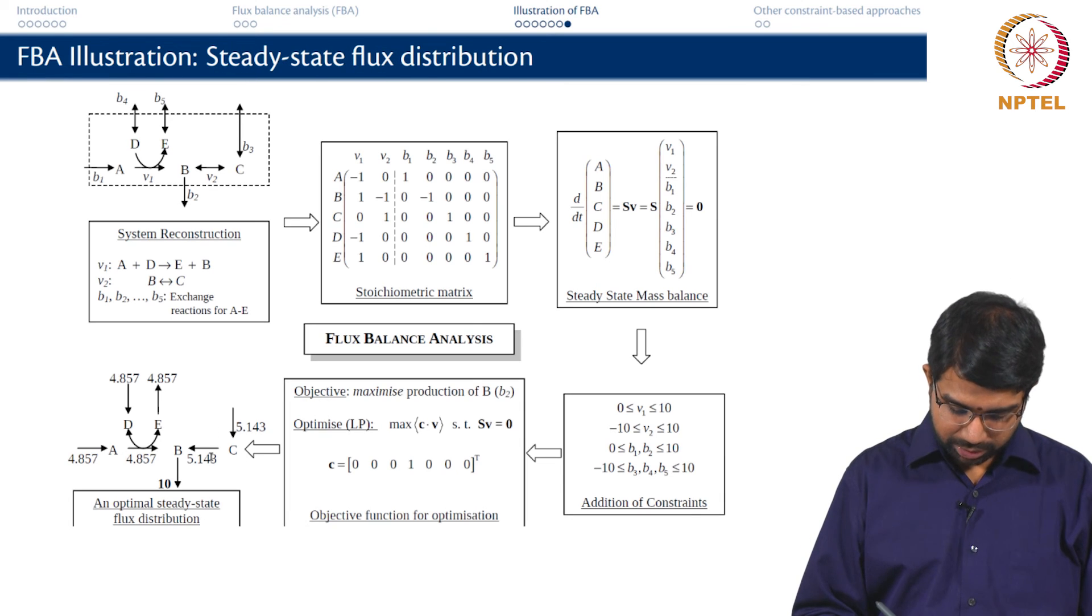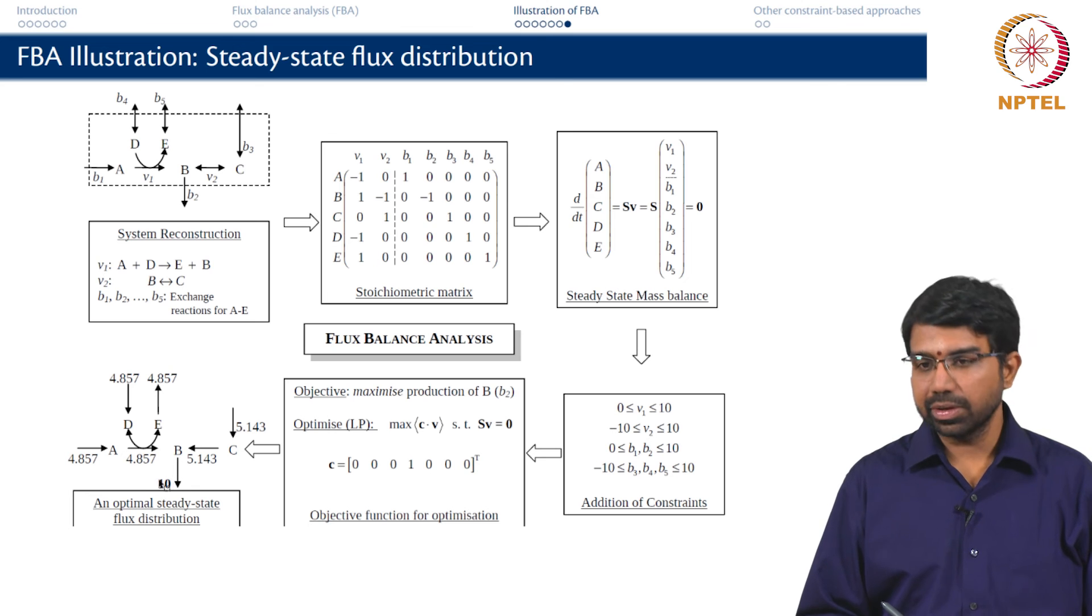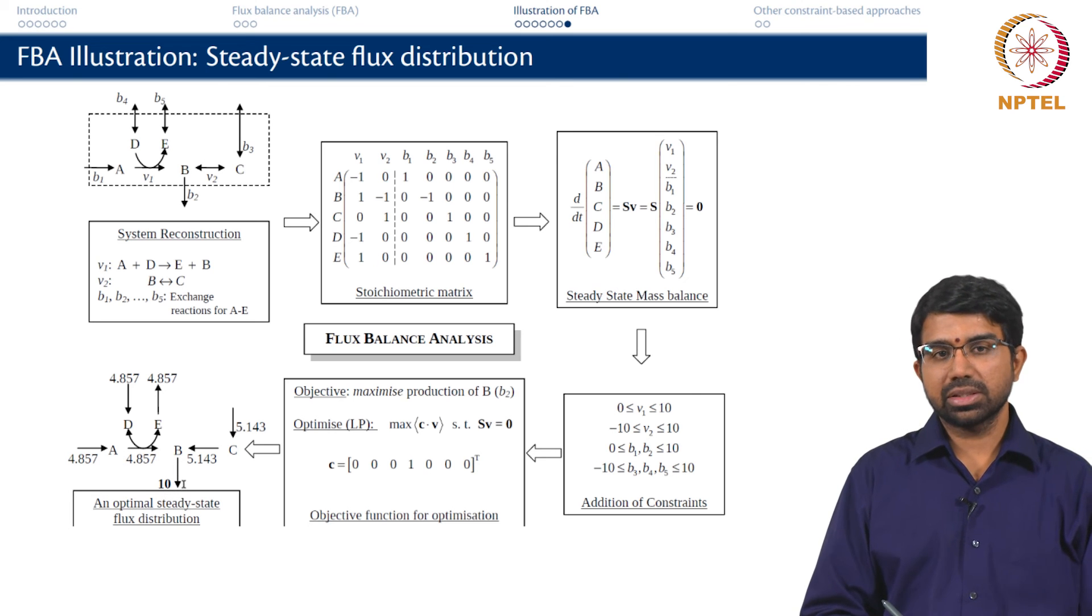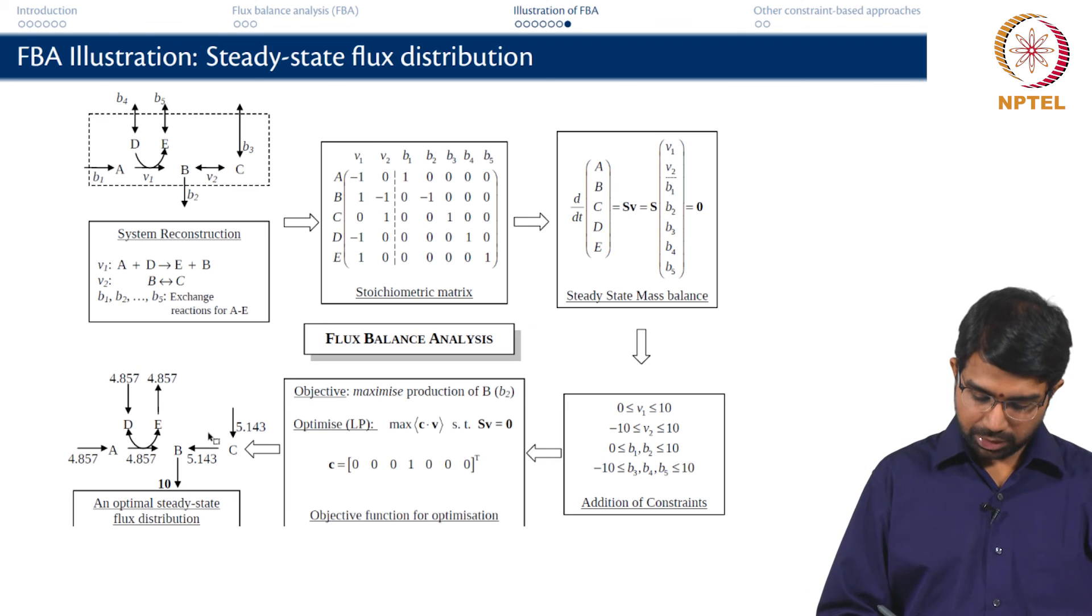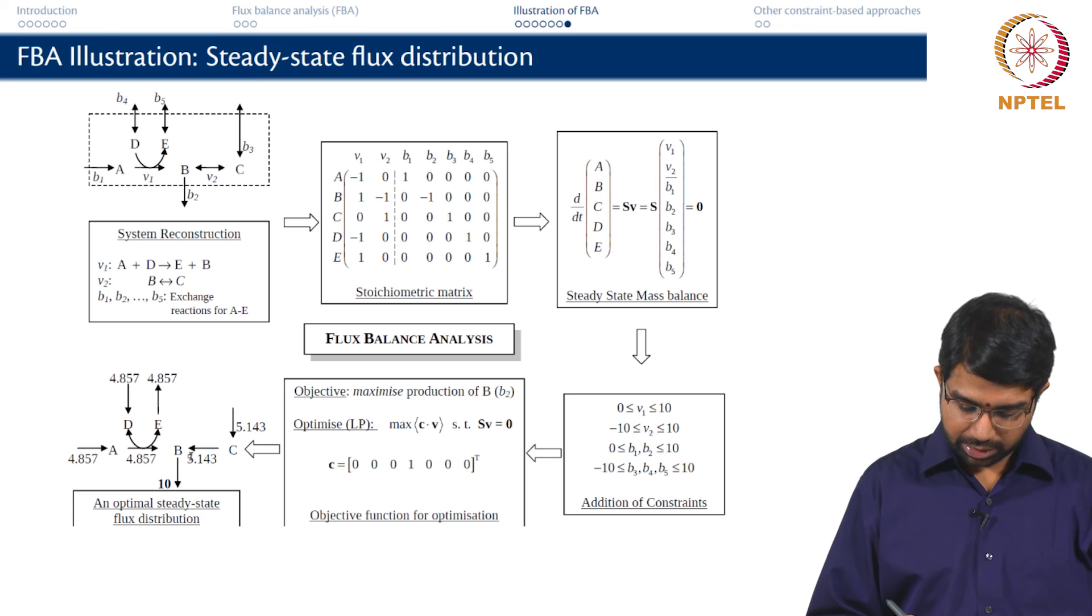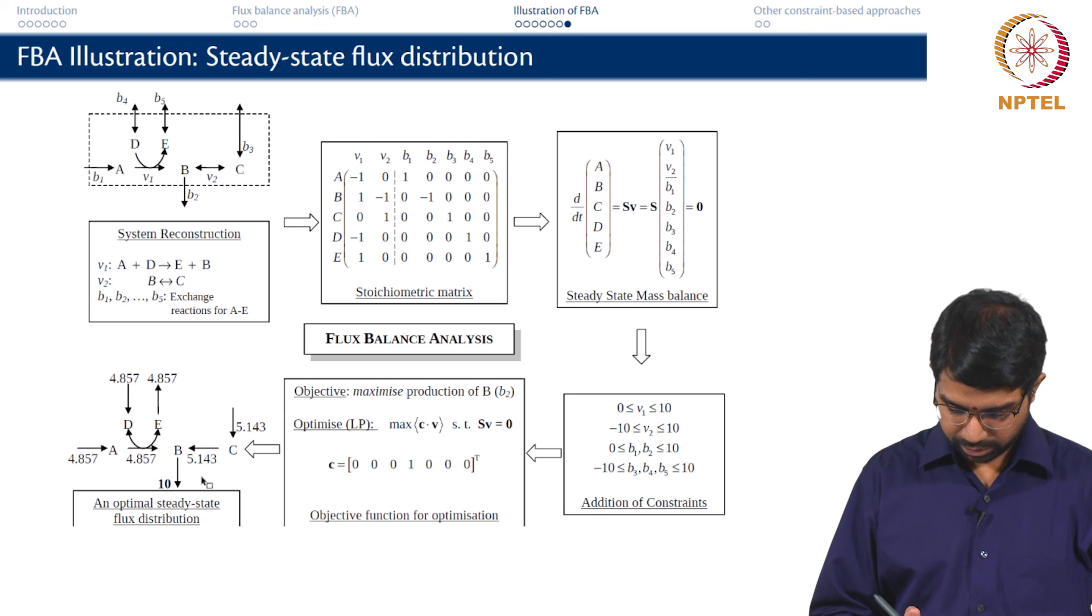One possible solution set is this. So you have 4.857 of A coming in, 4.8 of A coming in, 5.143 of B coming in giving 10. But if you see this is just one arbitrary solution, there are many equivalent solutions you might be able to come up with. You could just have 0, 0, 0, 0, 10, 10, 10.